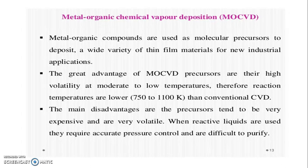In metal-organic chemical vapor deposition (MOCVD), metal-organic compounds are used as molecular precursors to deposit a wide variety of thin film materials for industrial applications. The great advantage of MOCVD precursors is their high volatility at relatively moderate to low temperatures; therefore, reaction temperatures are lower than conventional CVD. The main disadvantages are that the precursors tend to be very expensive, very volatile, and when reactive liquids are used, they require accurate pressure control and are difficult to purify.